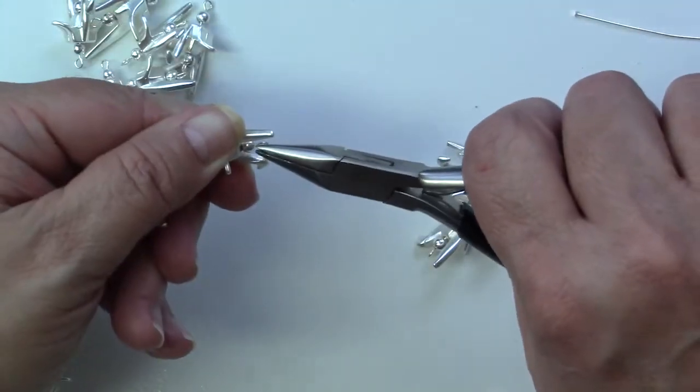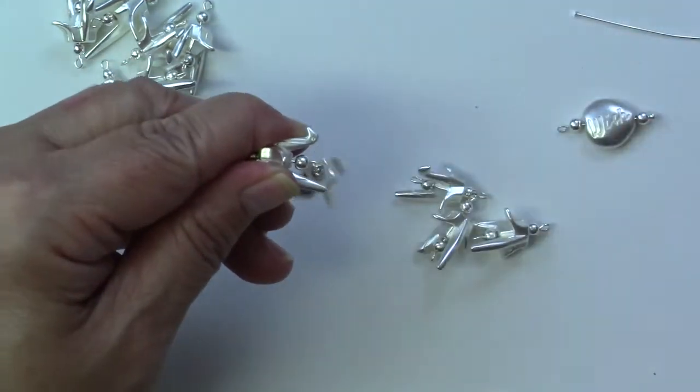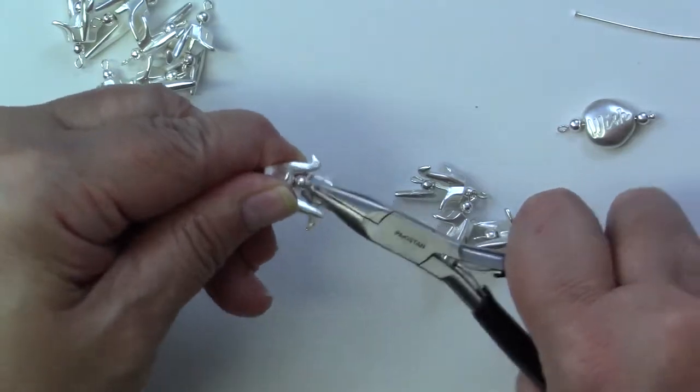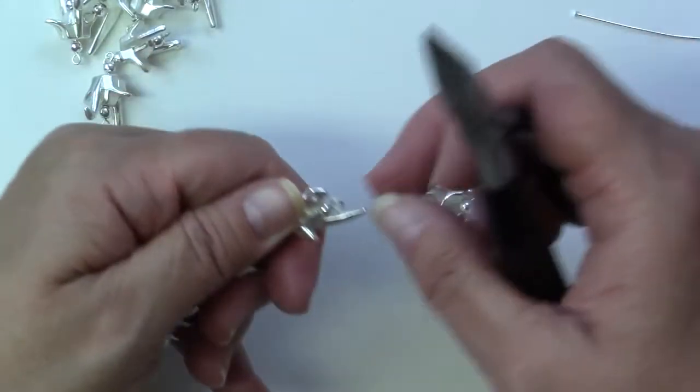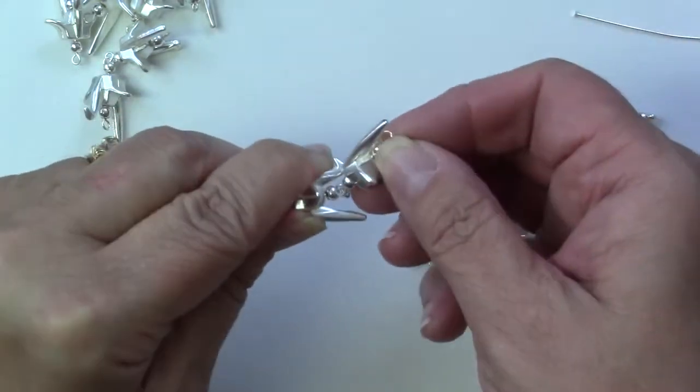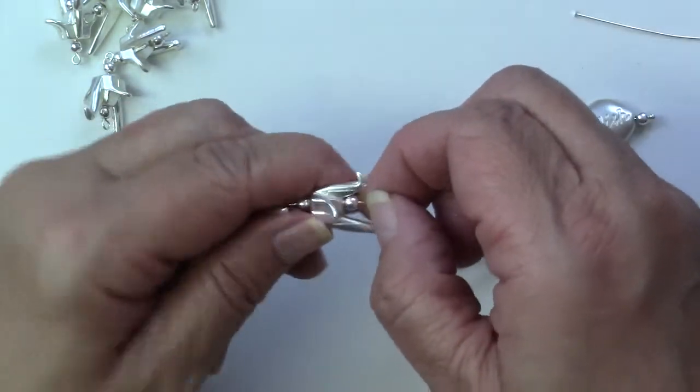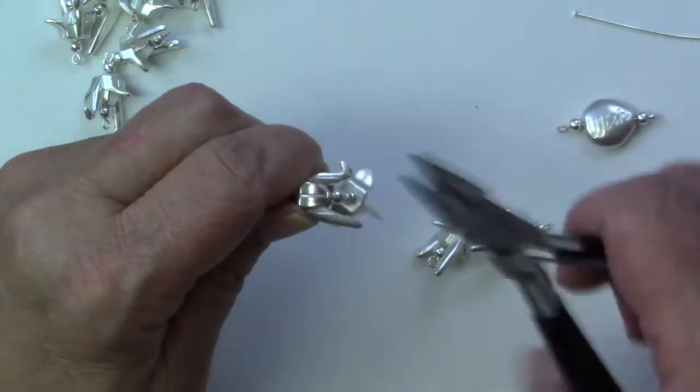This is a Y style necklace so I'll go ahead and complete adding together all of these connecting pieces. Seven on each side, so you can see here I'm just opening the loop and the way you open the loop is just to twist it and then I'll thread on the next piece and close up that loop.